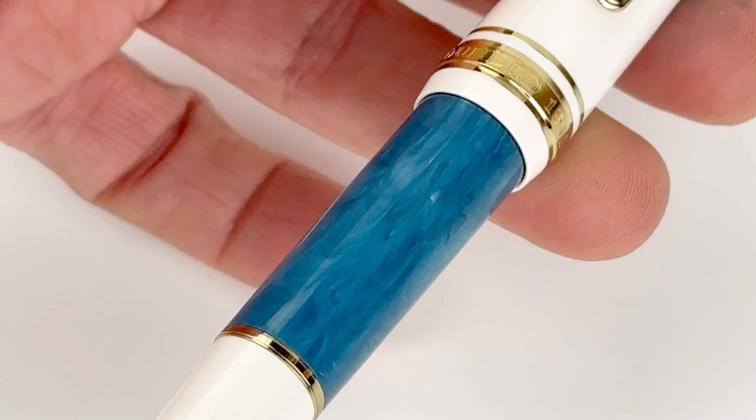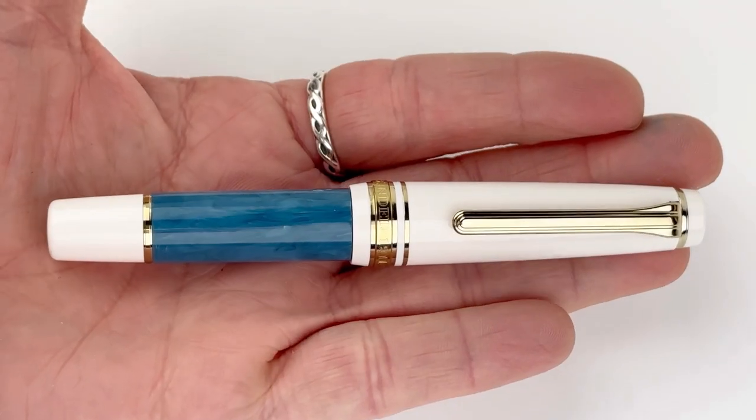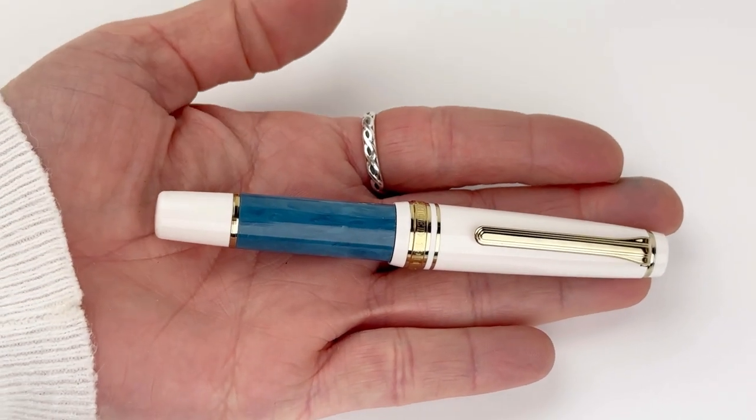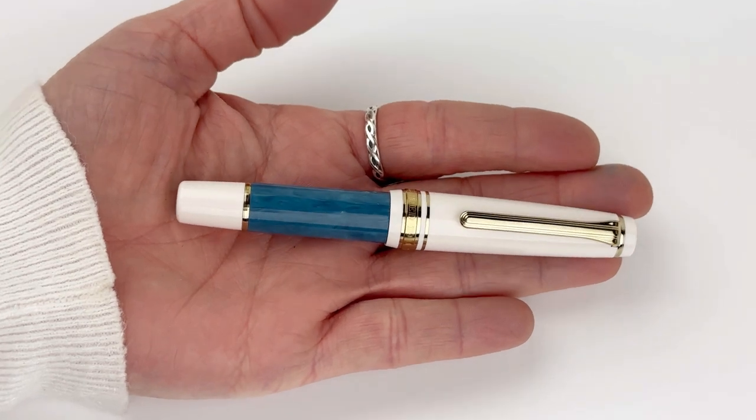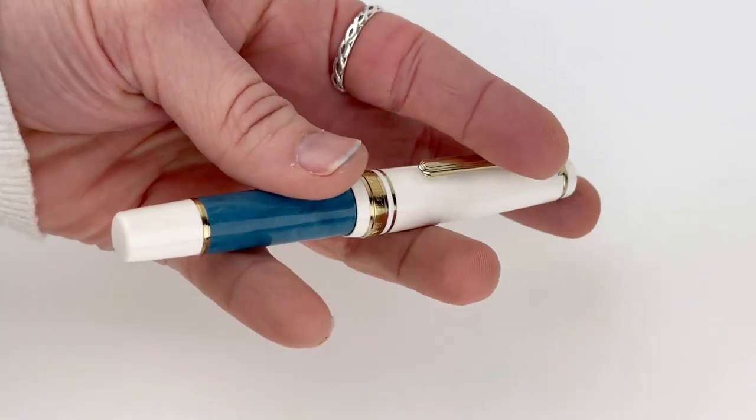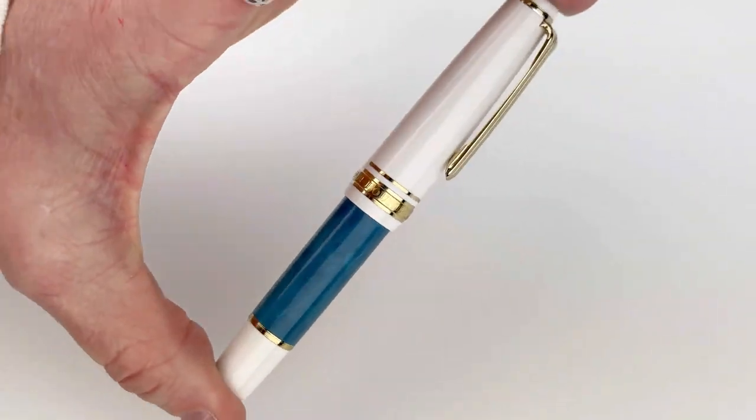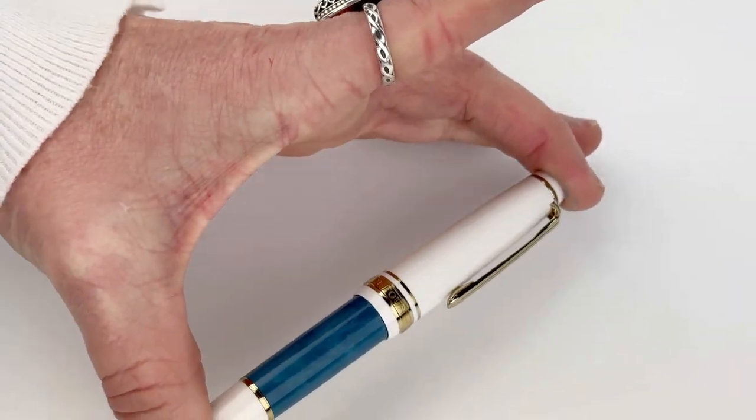You have the Sailor name and Japan engraved on the center ring. These are, as I said, the mini slim size of the Pro Gear, so you can see how small that is.